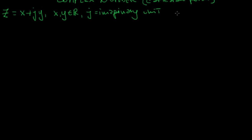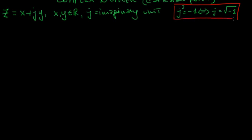The fundamental property of the imaginary unit is that j squared equals minus 1, or equivalently j equals the square root of minus 1. This is the fundamental property we will use to build complex numbers. In the Cartesian form, x is the real part and j·y is the imaginary part, where y is the scaling factor on the imaginary unit.